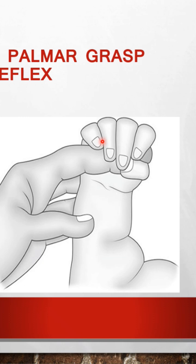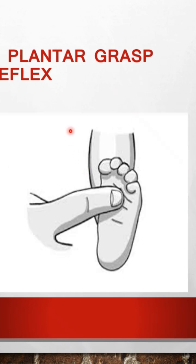Next is the palmar grasp reflex — the baby grasps when the palms are stroked. Disappearance age is 5 to 6 months. Then the plantar grasp reflex — the toes curl when the sole is stroked. Disappearance age is 9 to 10 months.